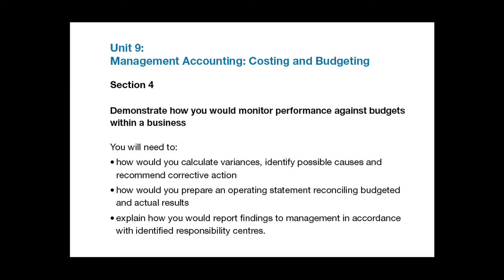Section 4, bullet point 1: you need to briefly describe the different types of variances, what might cause them, and recommend actions that will eliminate or minimise the variances. For example, if office equipment maintenance costs vary widely from month to month, then appropriate action might include staff usage training, renewal of equipment, and a planned preventative maintenance programme.